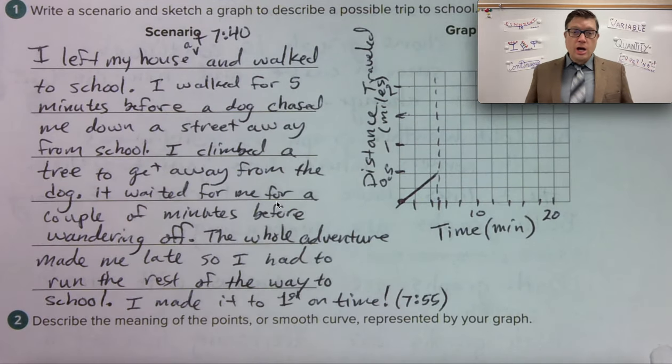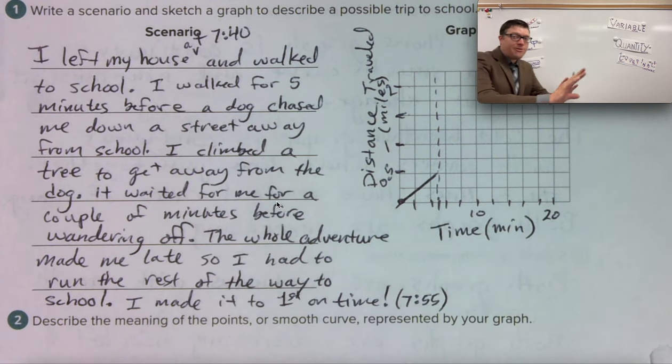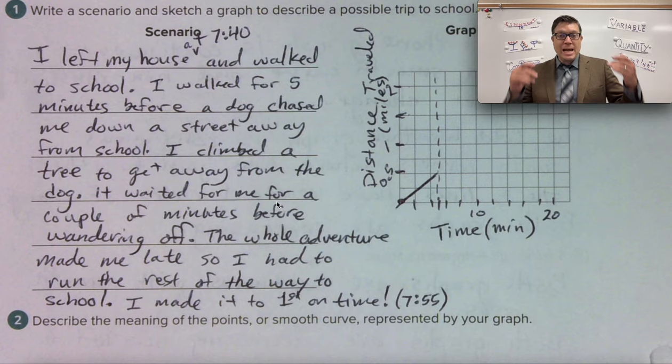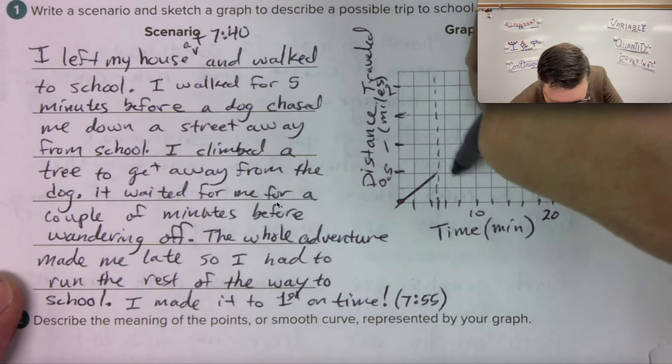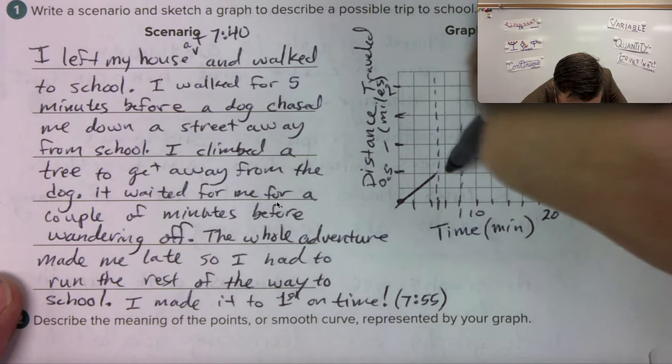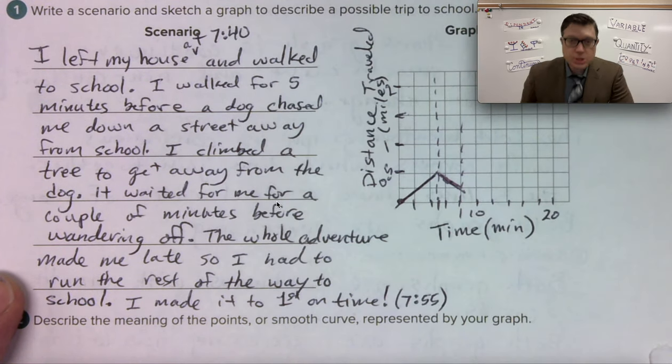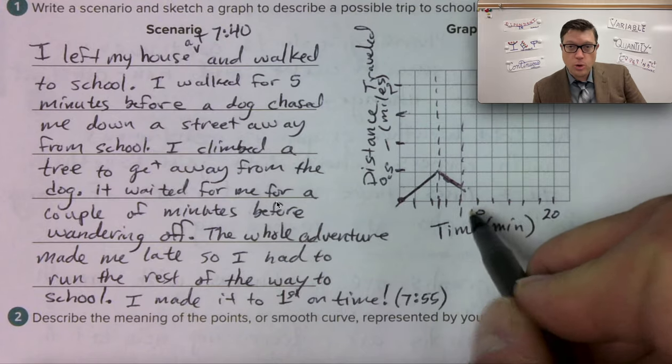Now, the dog chases me down a street and it's chasing me away from the school. So for the next maybe three minutes, the dog is going to chase me away from school, which means it's going to chase me back. So then I get to the tree and I wait in the tree for two minutes.